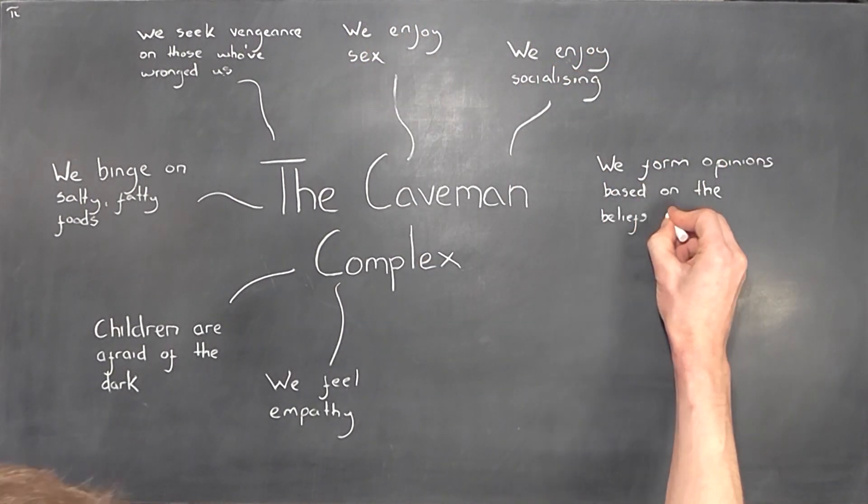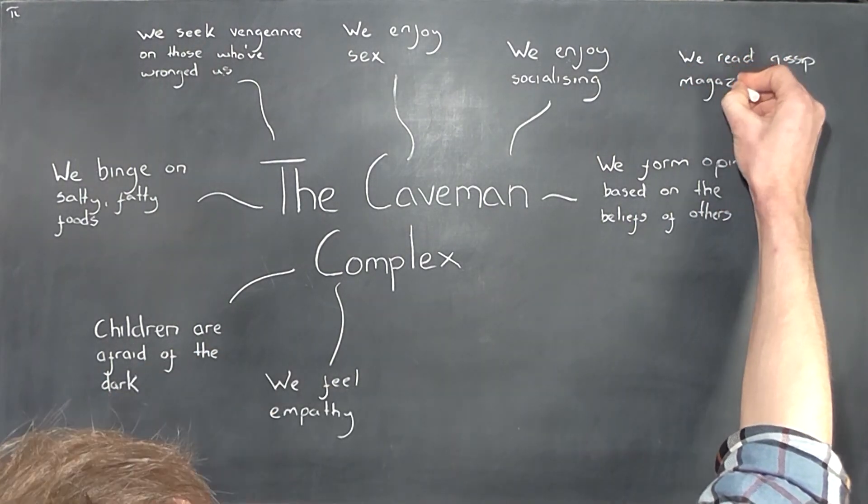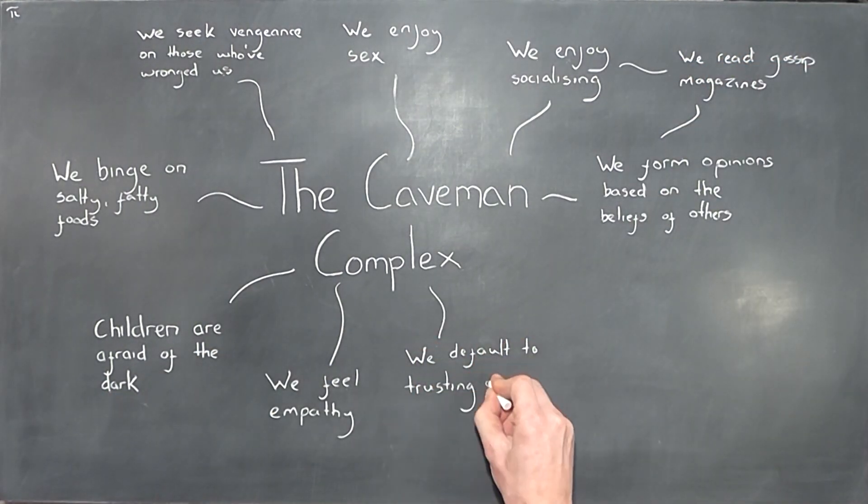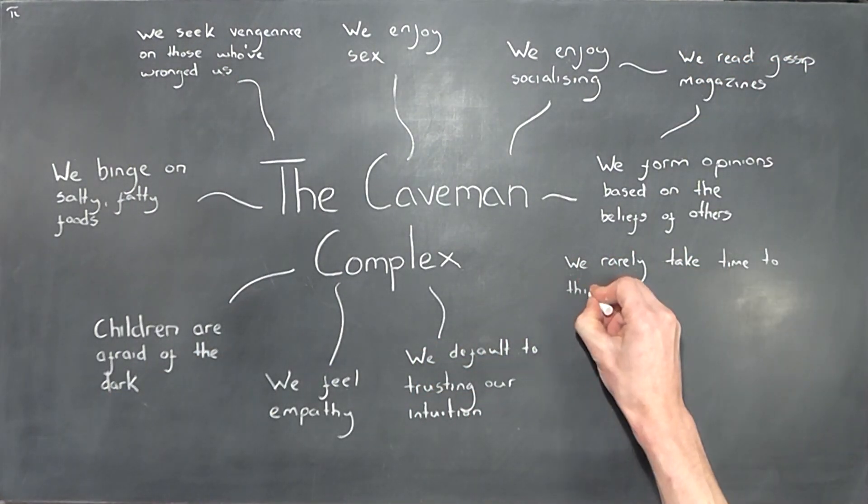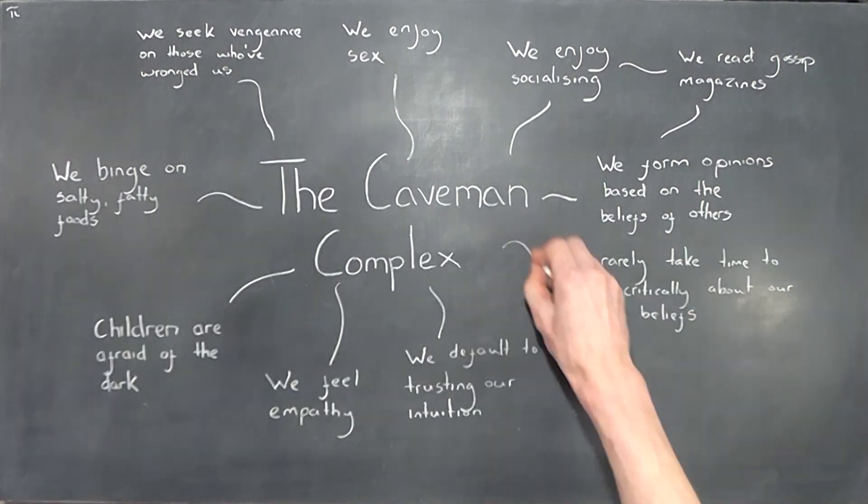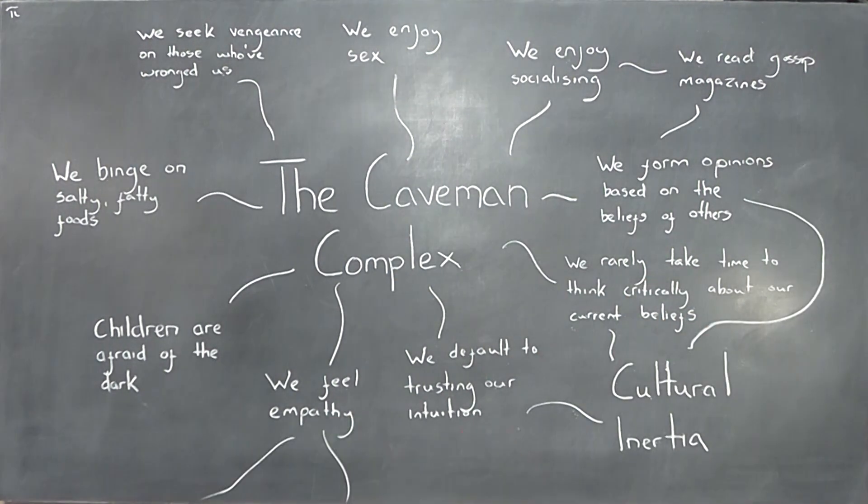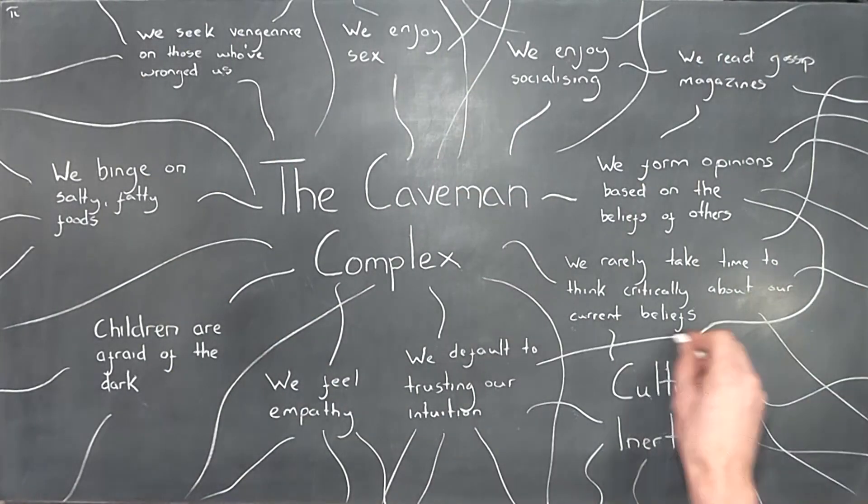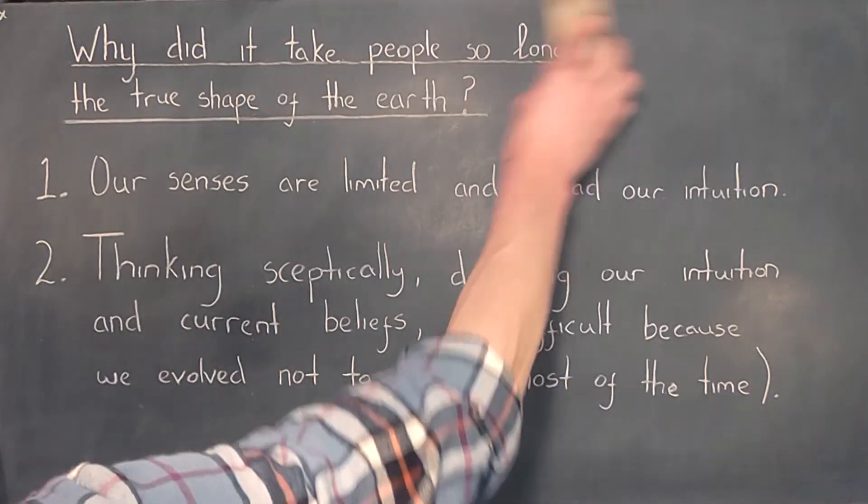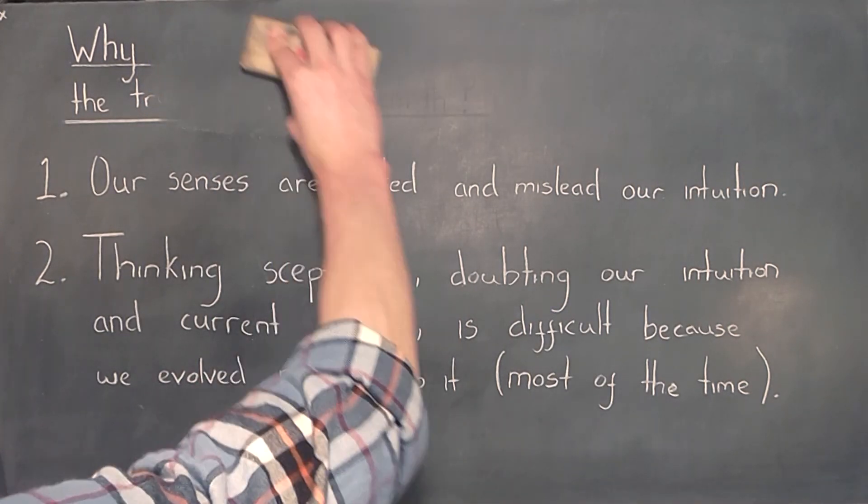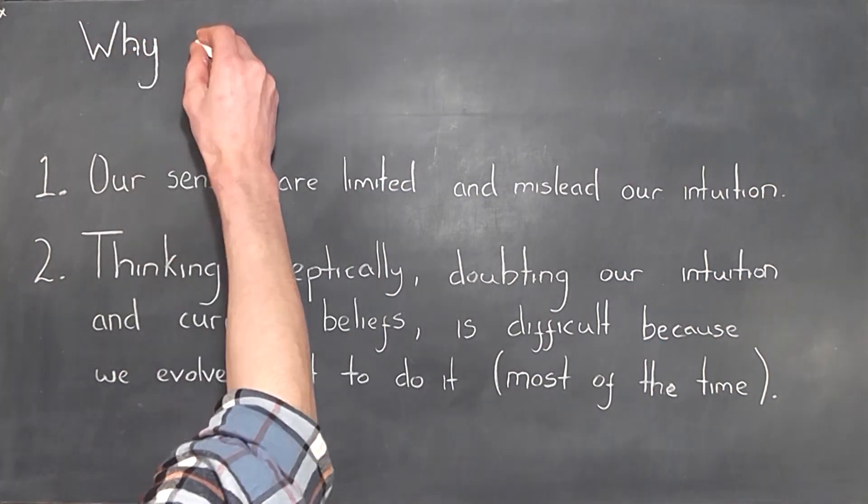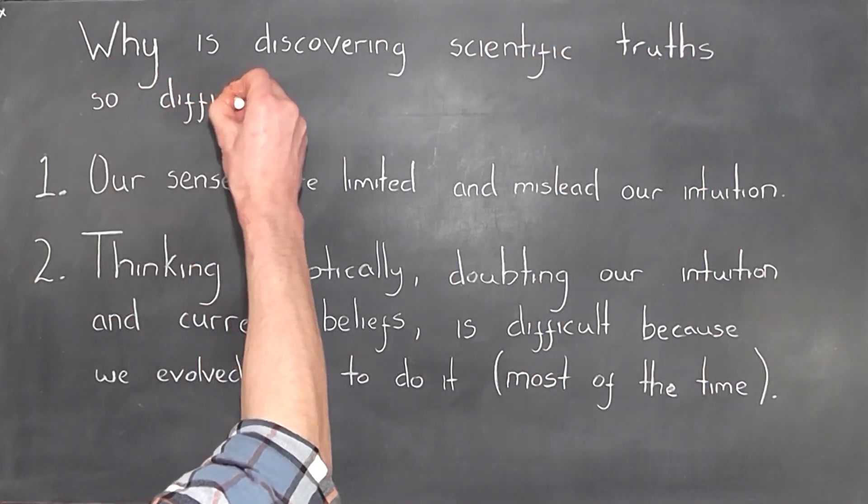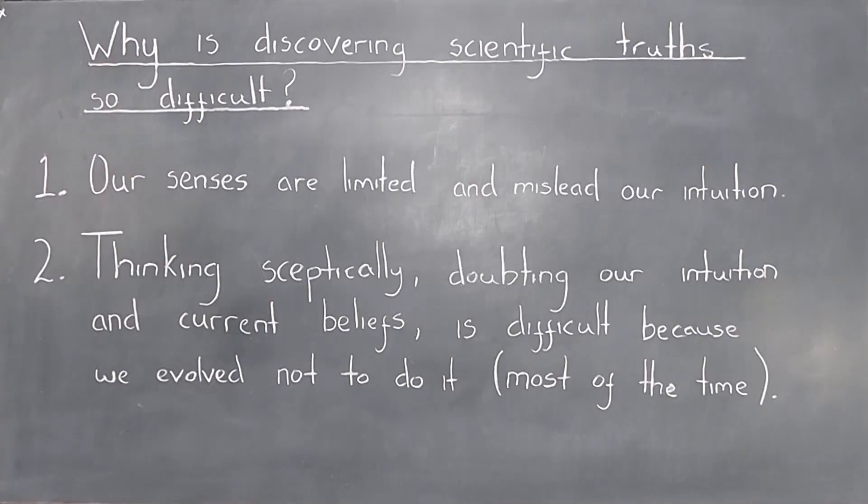And there's even an entire branch of the subject dedicated to its study, which is inventively called evolutionary psychology. Put more simply, the same way 10,000 years isn't enough time for evolution to have significantly changed our bodies, it's also not enough time to have significantly changed our minds. And the same obstacles which prevented people from discovering the true shape of the earth thousands of years ago, still apply to us just as much today when researching quantum physics as they did 10,000 years ago when people thought the earth was flat.